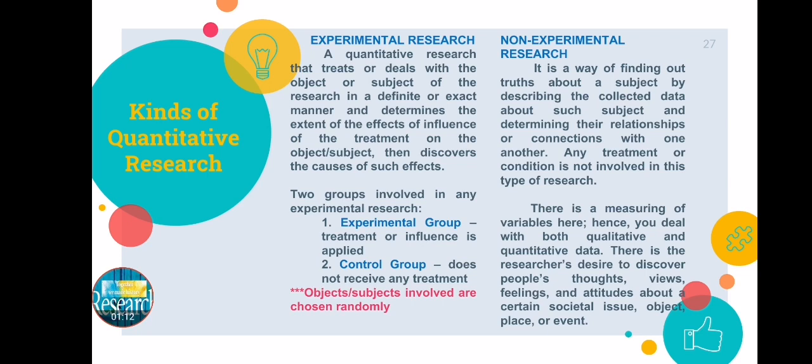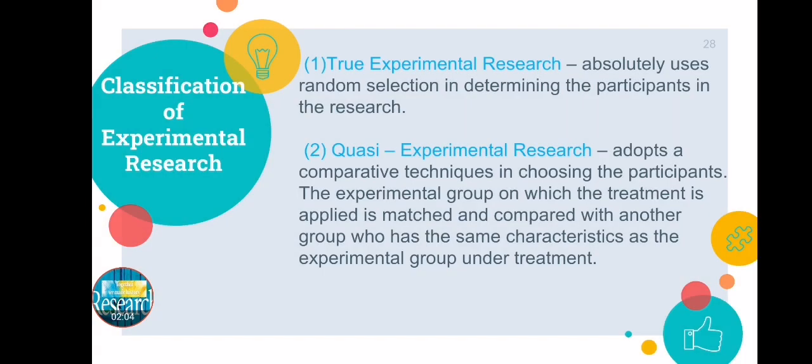The object or subject in experimental research is chosen randomly. Non-experimental research, on the other hand, is a way of finding out truths about a subject by describing the collected data about that subject. It also determines the relationships or connections among variables. No treatment or condition is involved in this type of research. It deals with both qualitative and quantitative data, and the researcher desires to discover people's thoughts, views, feelings, and attitudes about a social issue, object, place, or event.